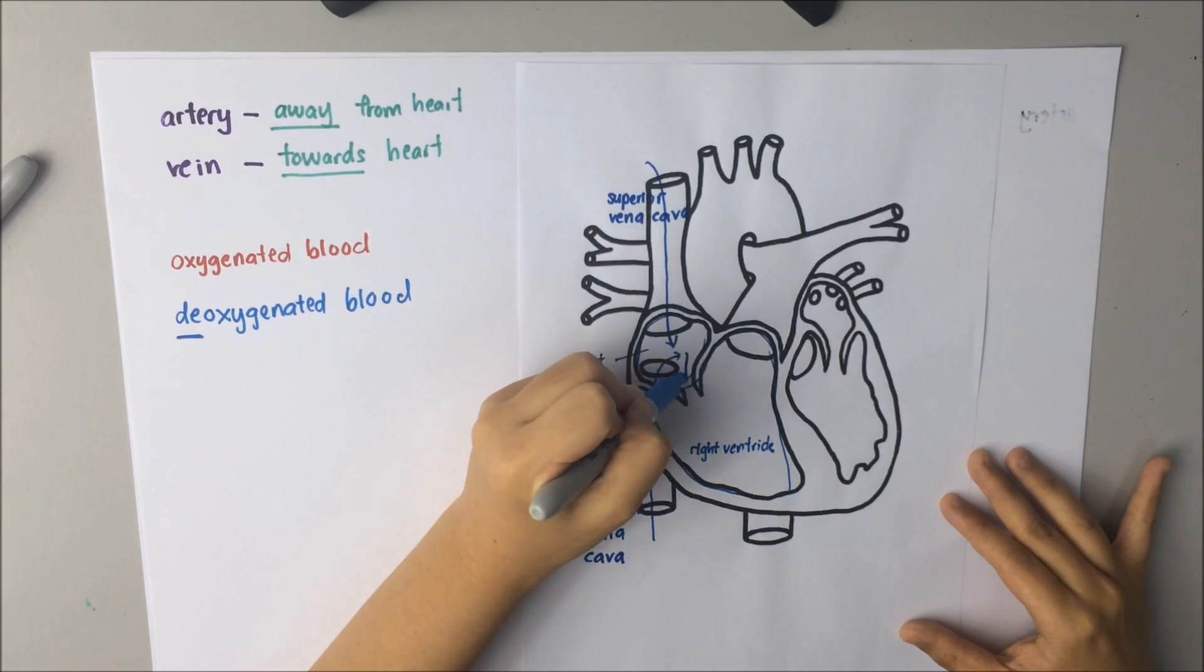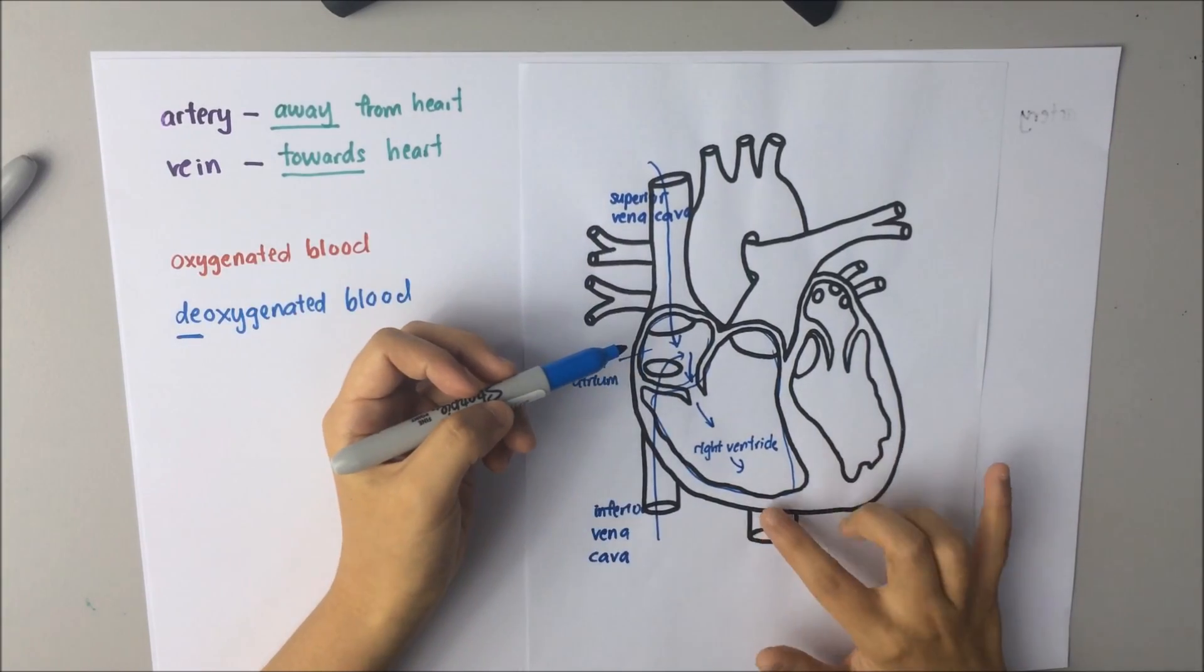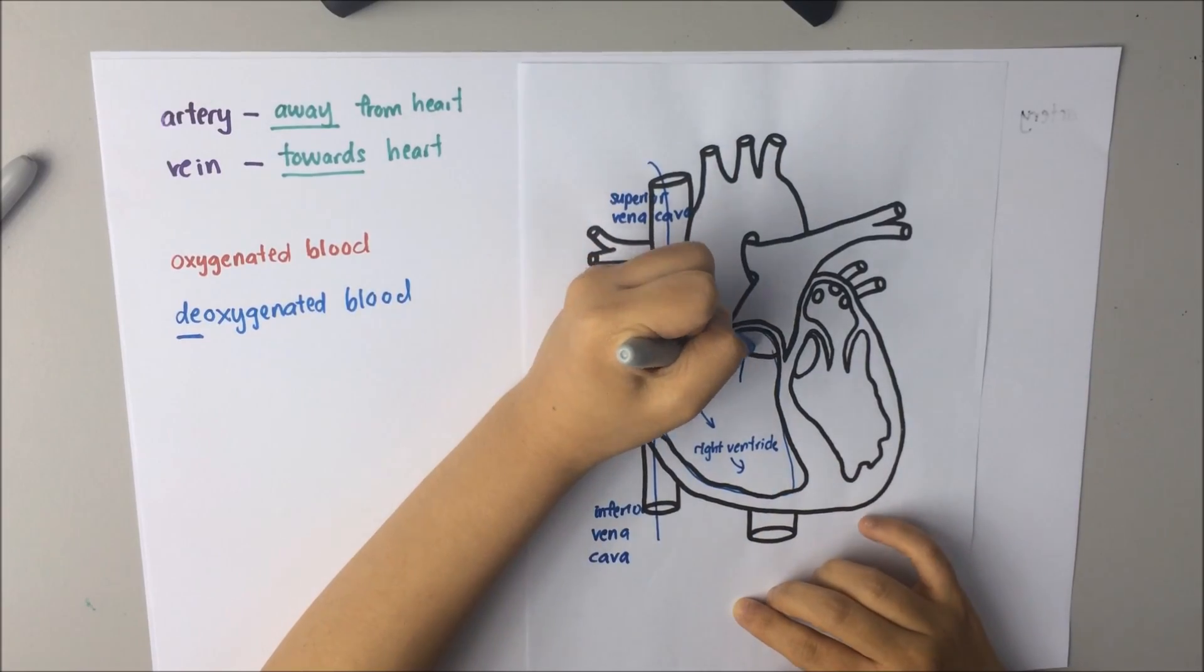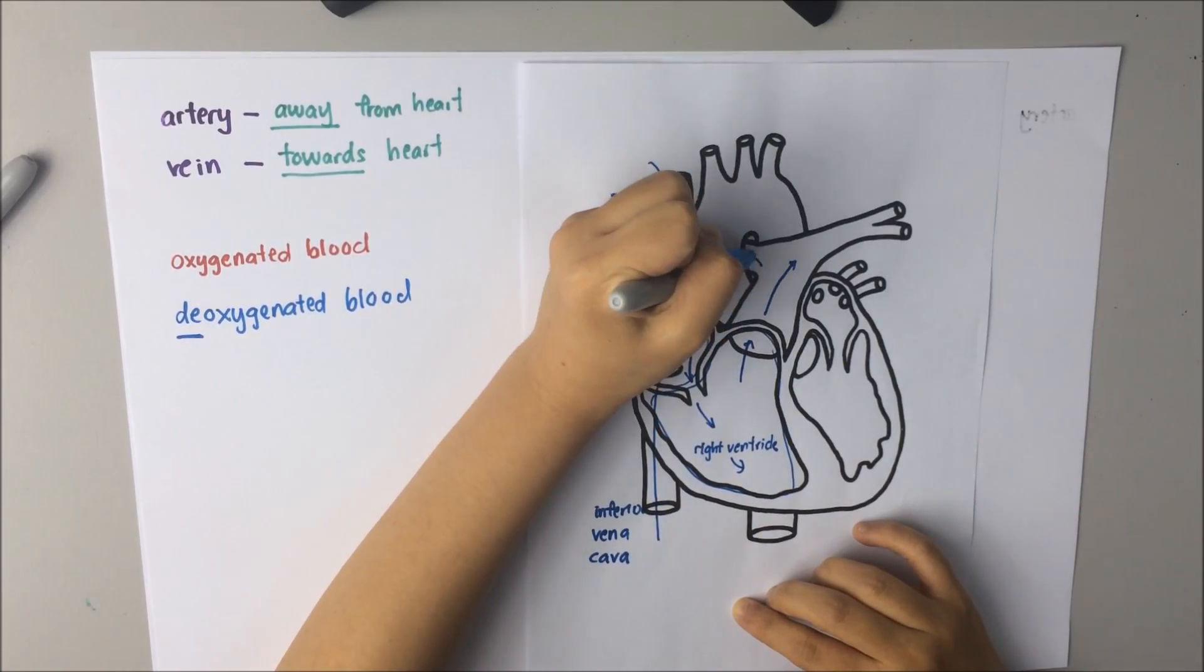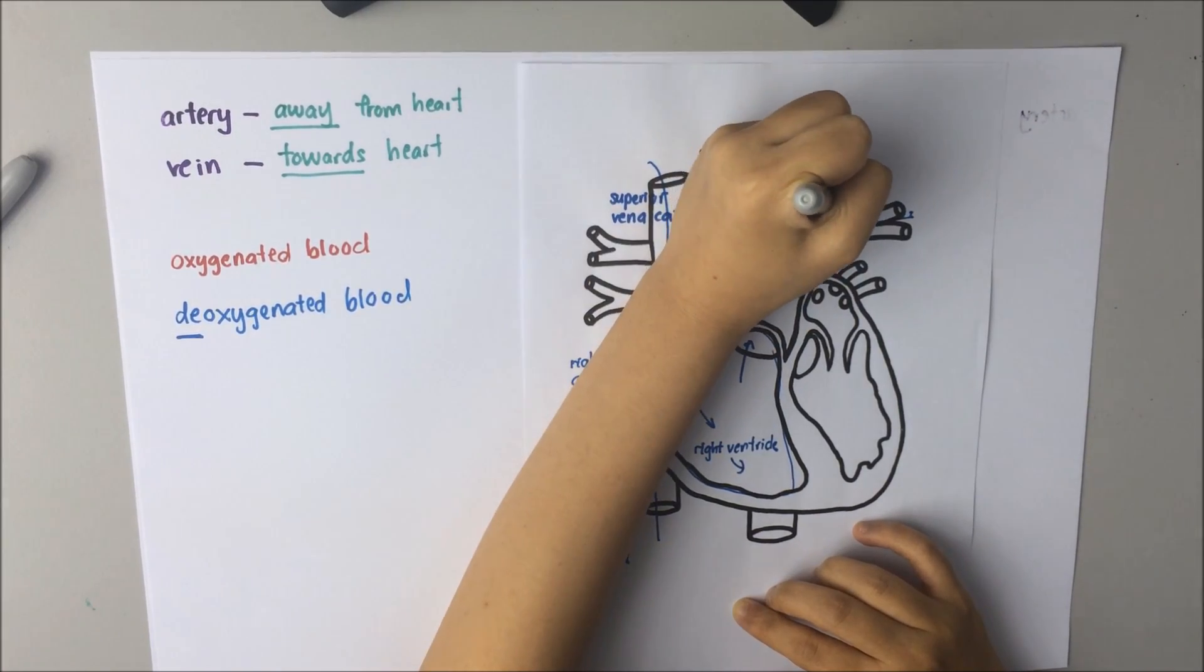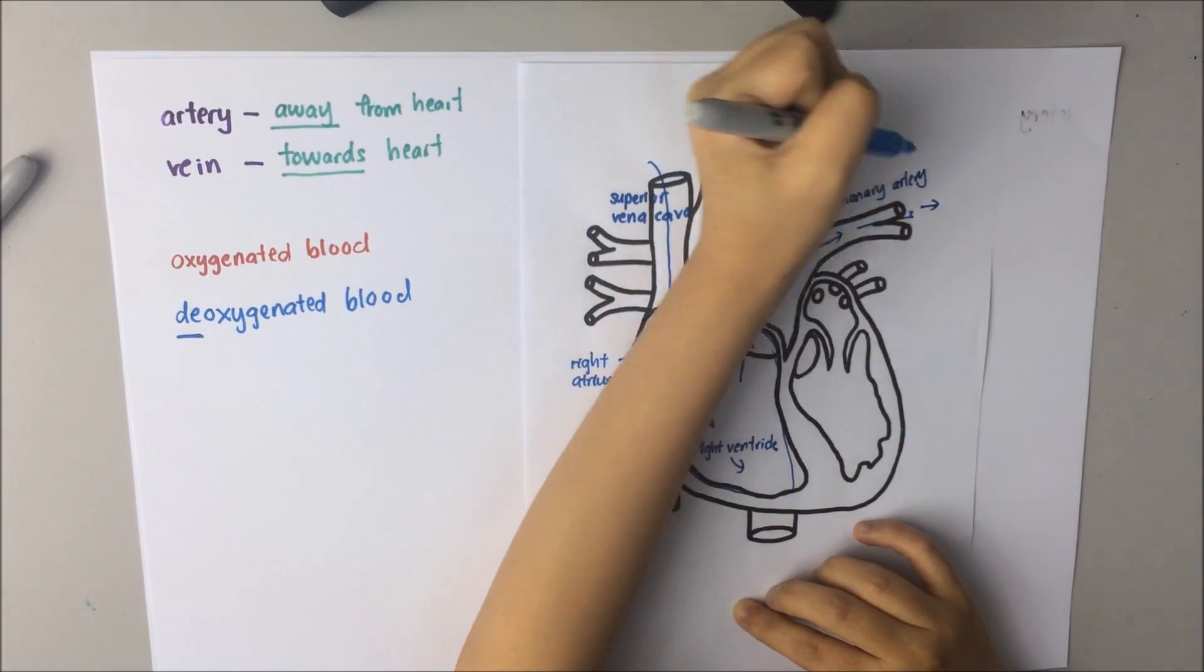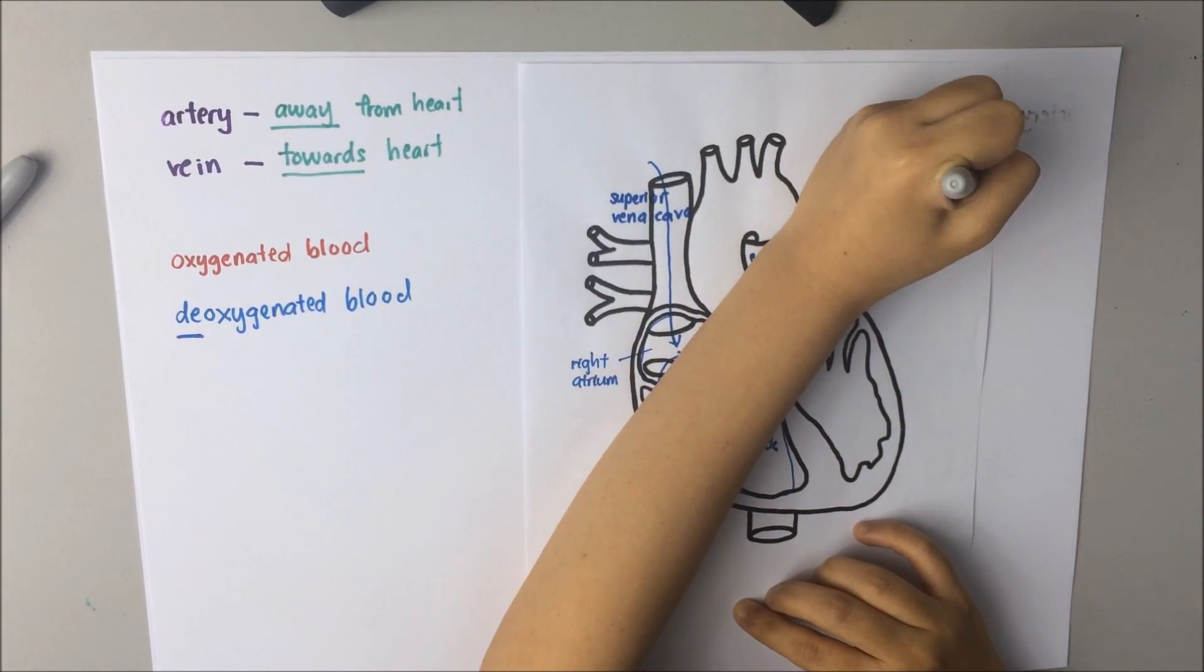The blood in the atrium is then pumped into the ventricle. And as the right ventricle contracts, the blood is pumped into the pulmonary arteries to the lungs. Remember, artery away from heart. It is pumped into the lungs to allow for intake of oxygen and also removal of carbon dioxide.